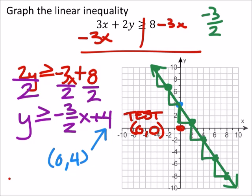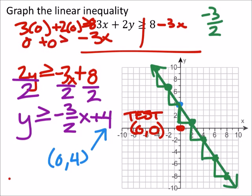So on this one, I've got 3 times 0, plus 2 times 0. This should be greater than or equal to 8. And so I got 0 plus 0 is greater than or equal to 8. 0 is greater than or equal to 8. That's false.